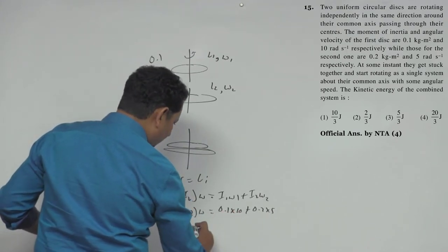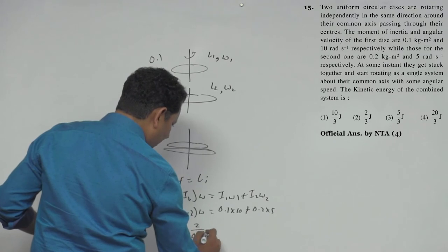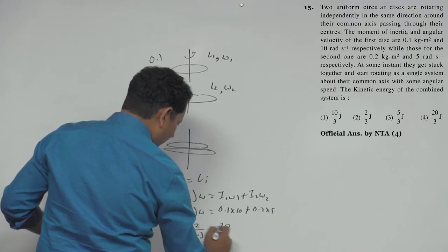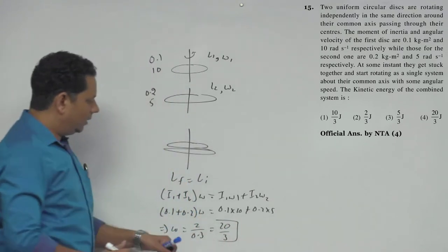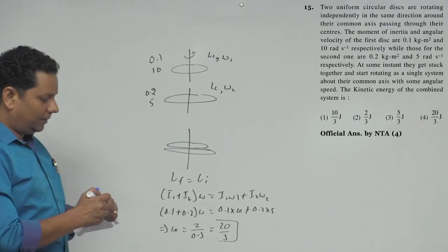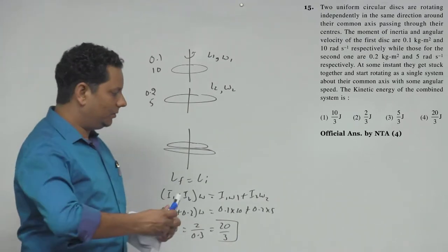This gives us 2 divided by 0.3, or 20 by 3.